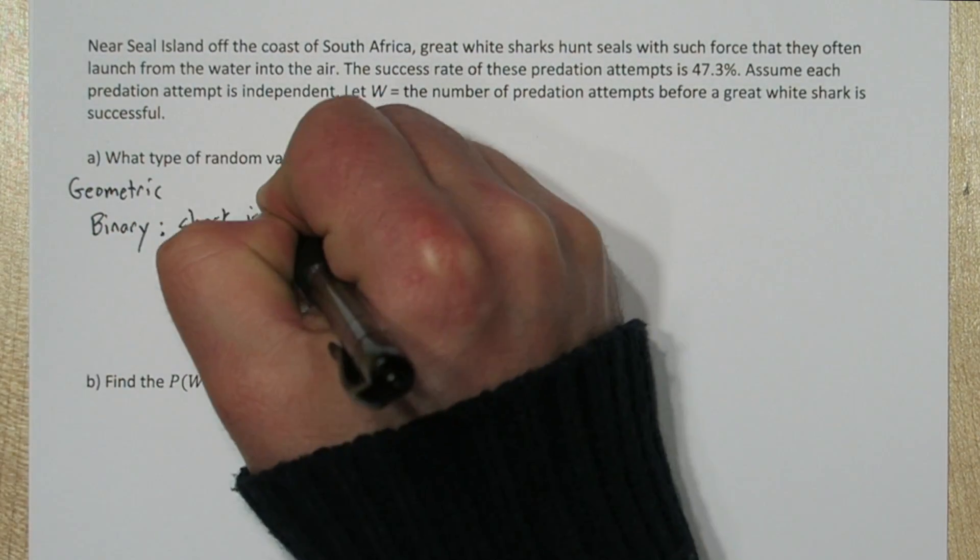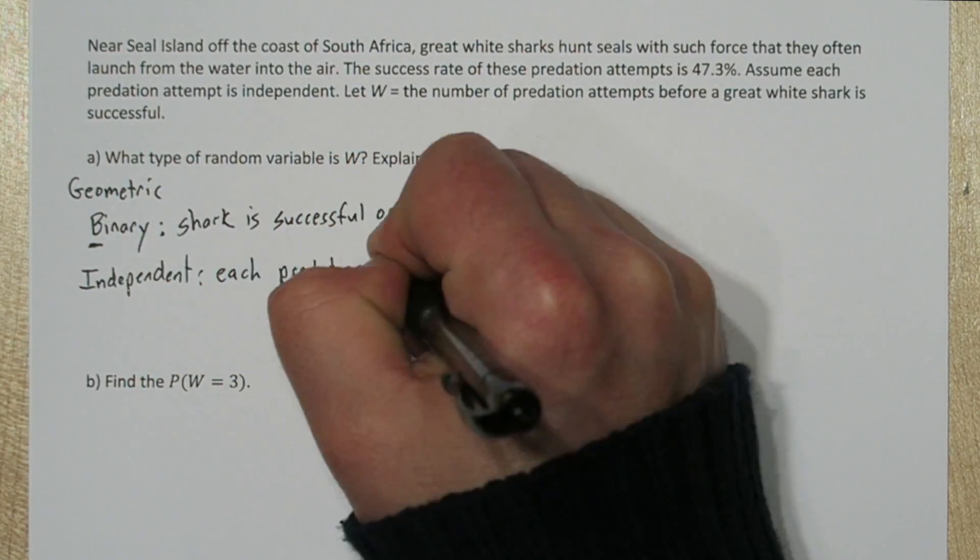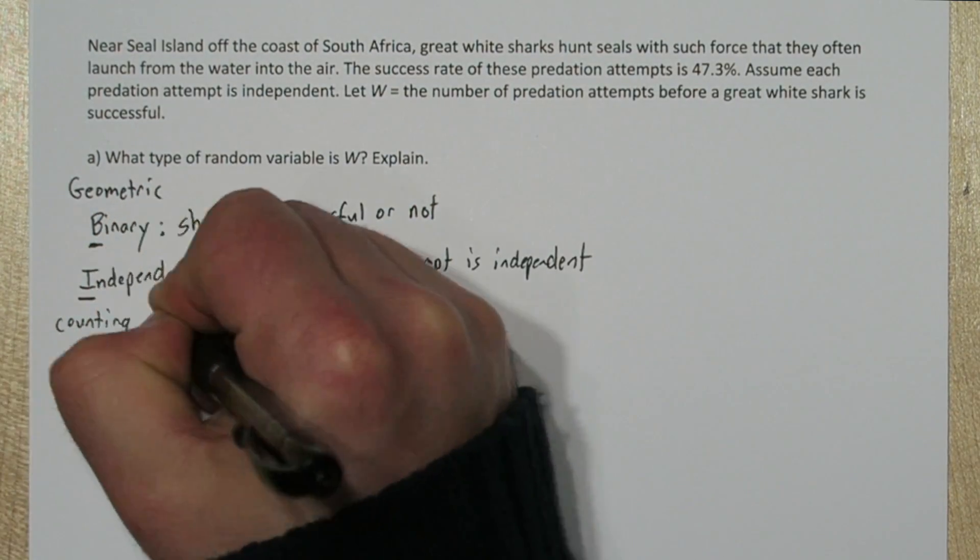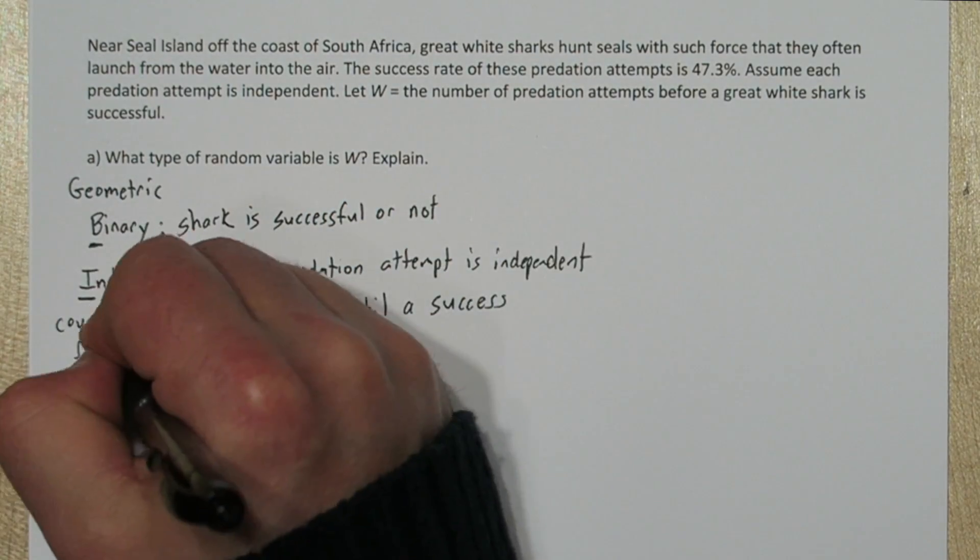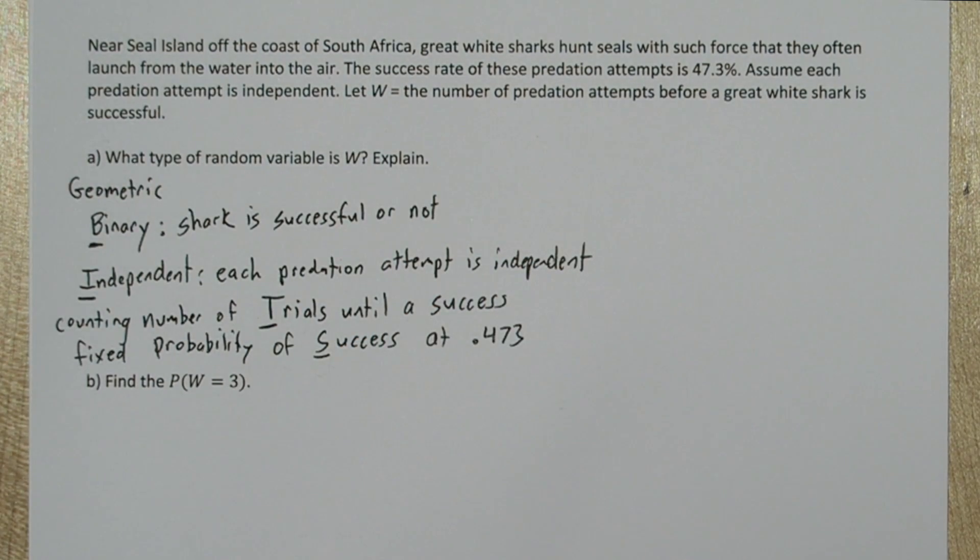First, it's binary because the shark is either successful or not. Second, it's independent, we're told each predation attempt is independent of the others. Next, we're counting the number of trials until a success occurs. And finally, we have a fixed probability of success at .473.